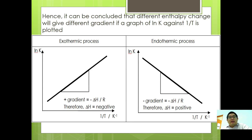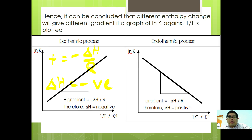Different enthalpy changes give different gradients on the graph. For an exothermic process, the gradient is positive; since gradient equals negative delta H over R, this gives a negative delta H, confirming an exothermic process. For an endothermic process, a negative gradient leads to a positive delta H value.